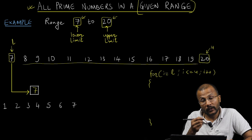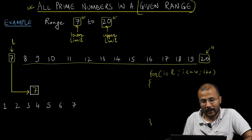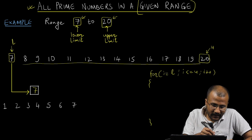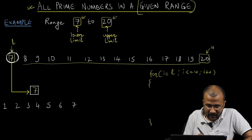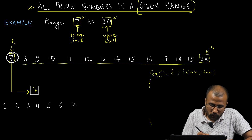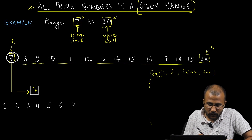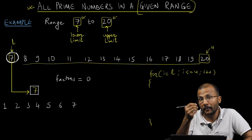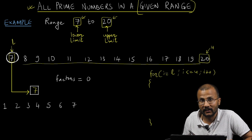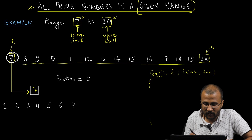Now I need to check one by one whether that number is prime or not. How do I check whether 7 is prime? The idea is very simple — we have already seen this before. First of all, I will make sure that the number of factors of 7 encountered so far is 0. Initially I will make the number of factors as 0.